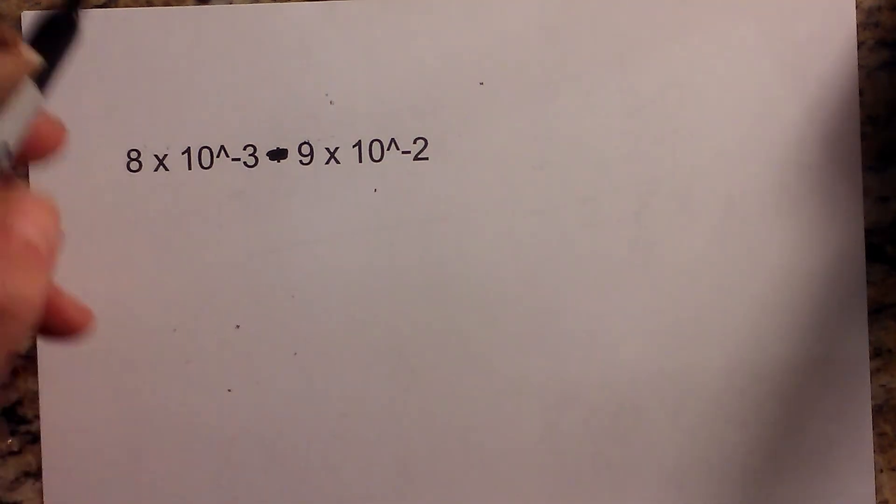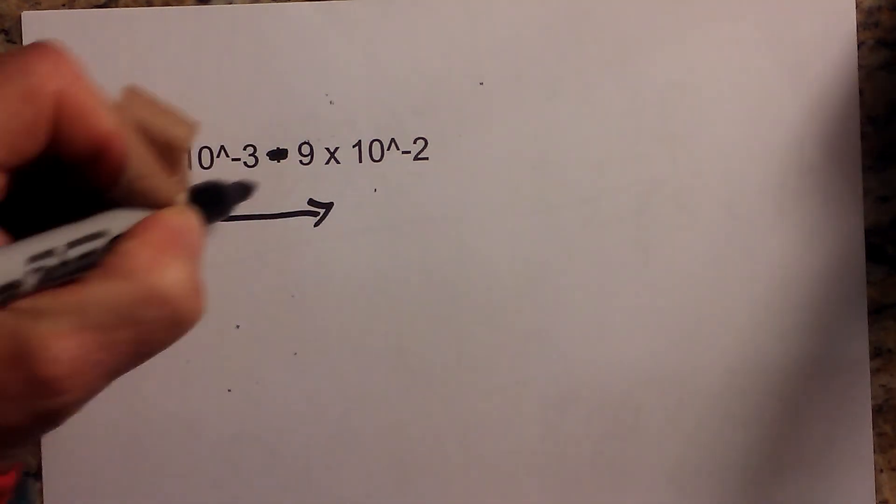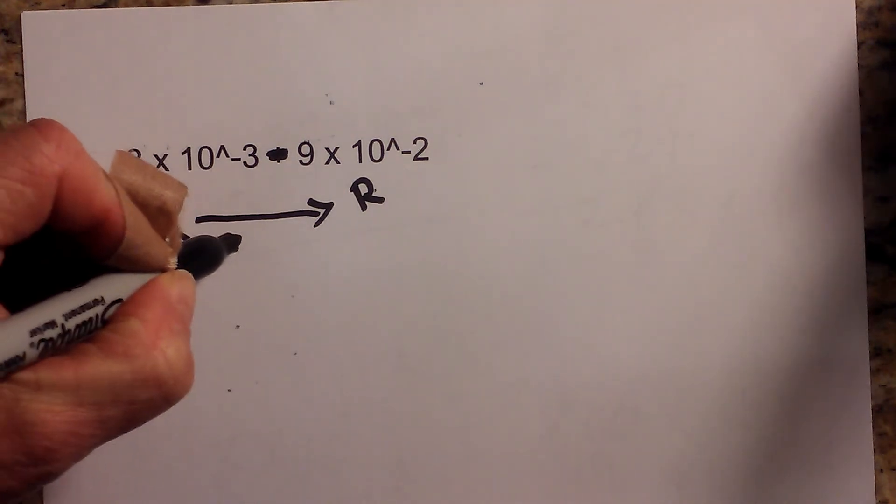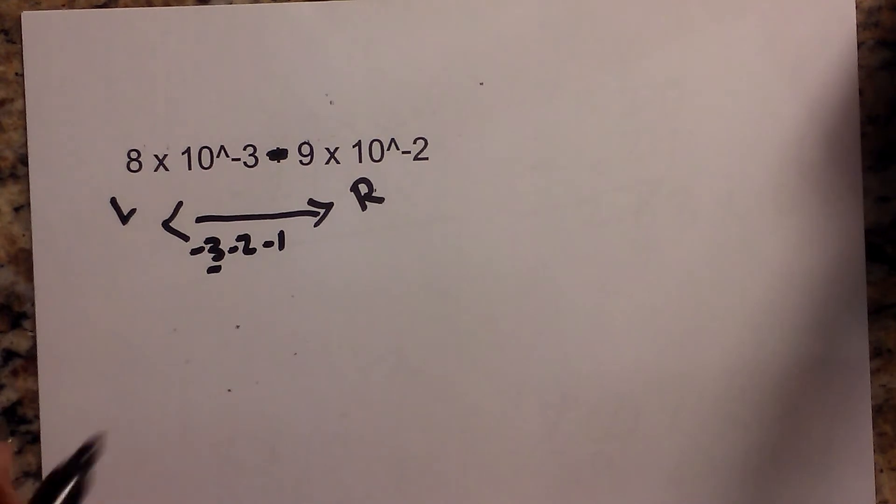But if you remember from a number line, everything to the left is smaller than all the numbers to the right. So negative 3, negative 2, negative 1. So actually negative 3 is smaller than negative 2.